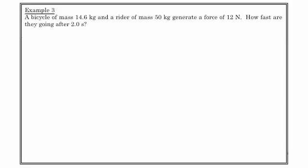Example three, a bicycle of mass 14.6 kilograms and a rider of 50 kilograms generate a force of 12 newtons. How fast are they going, i.e., what's the velocity, after two seconds? So this is a great problem, because what this looks at is now taking information that we can get from the forces to find an acceleration. And using that information to then pop into a kinematics situation to determine a velocity. So what do we know? We know that the mass of the bike is 14.6 kilograms. We know that the mass of the rider is 50 kilograms. The force that's being generated by those two things is 12 newtons. And it's acting for a time of two seconds. So what's v2? So we're going to need to do this in two steps. And we're also going to assume that v1 is equal to zero.